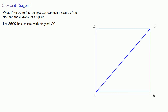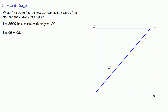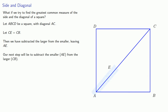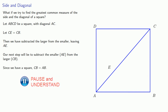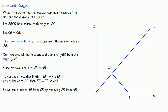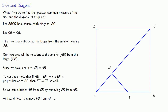Let ABCD be a square with diagonal AC. We want to subtract the smaller from the larger — and that's going to be the side. So let CE be equal in length to the side CB. Then we have subtracted the side from the diagonal, leaving AE. Our next step will be to subtract the smaller AE from the larger CB. Since we have a square, CB is the same as AB. Note that if we take AE equal to EF, where EF is perpendicular to AC, then EF will equal FB as well. So that means we can subtract AE from CB by removing FB from AB. Our next step would be to remove FB from the remainder AF. But this is the side from the diagonal of a smaller square.